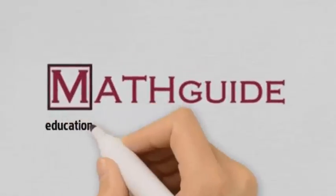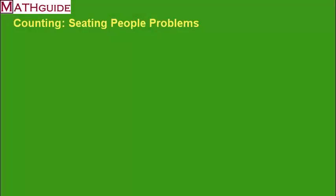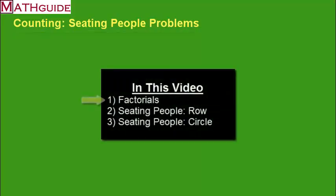This is MathGuide.com and my name is Mark Karadimos. In this video we're going to talk about counting problems, specifically seating people type of problems. In our first section we're going to talk about what a factorial is. In our second section we're going to talk about how to arrange people in a row. In our third section we're going to talk about how to arrange people in a circle.